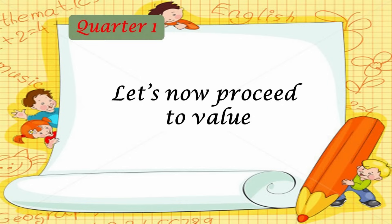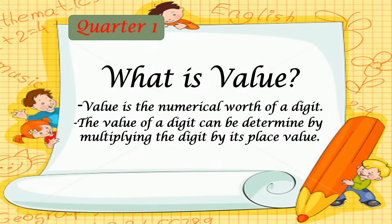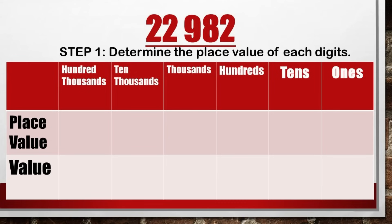Let's now proceed to value. What is value? Value is the numerical worth of a digit. The value of a digit can be determined by multiplying the digit by its place value. To get the value of each digit in 22,982, you need to follow certain steps. Step 1: determine the place value of each digit.